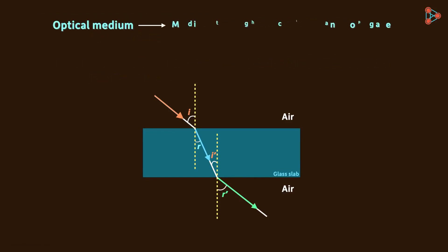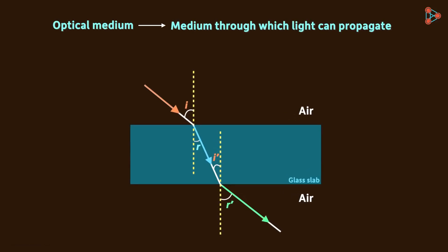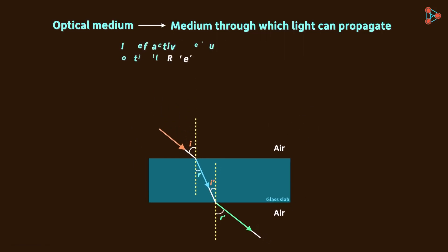When a light ray goes from a rare to a dense medium, it bends towards the normal — for example, air to glass. When it goes from a dense to a rare medium, it bends away from the normal — for example, glass to air. We have already covered this; this is just a revision.